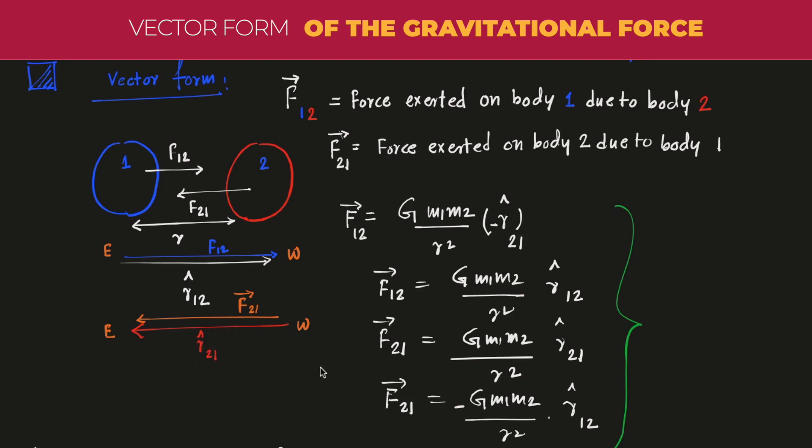Because r̂12 and r̂21, they are basically opposite to each other. Similarly, if I write in terms of r̂12, then this will be, there will be a positive sign. You can get the idea I think.